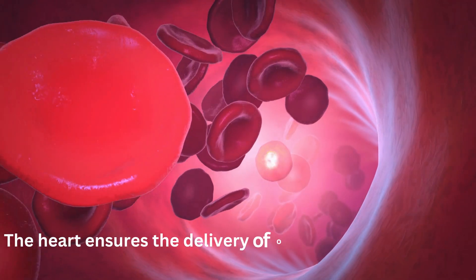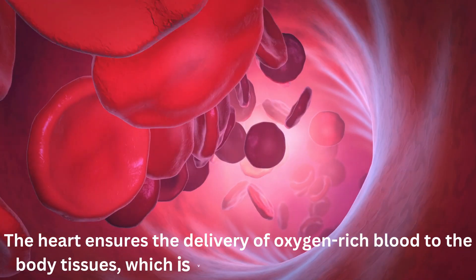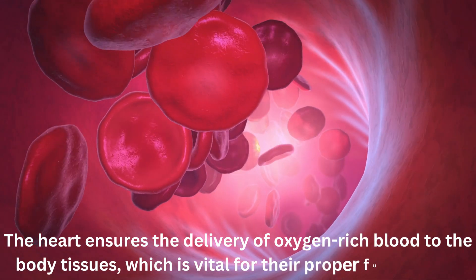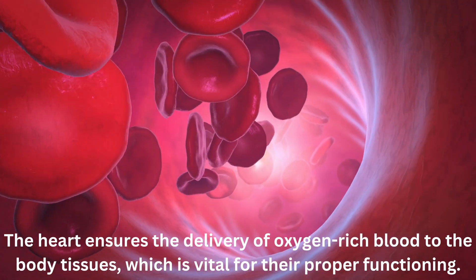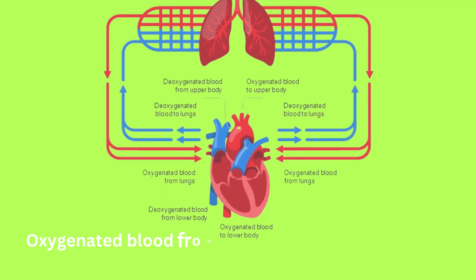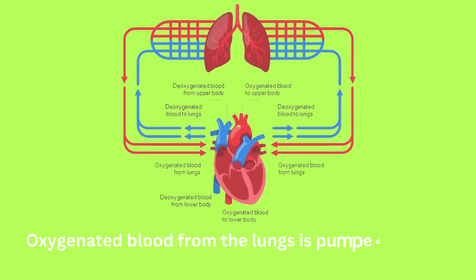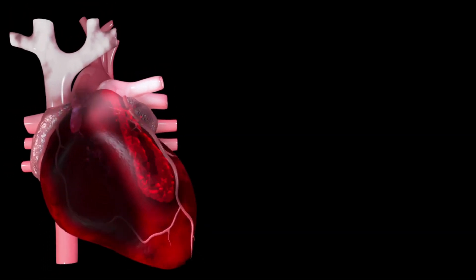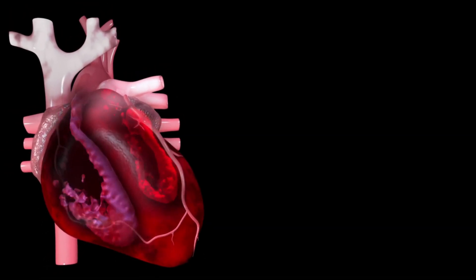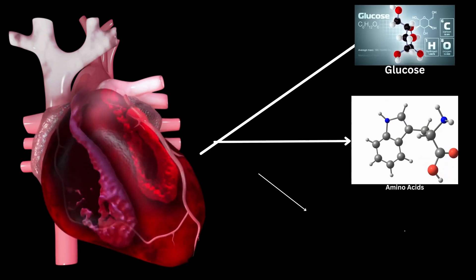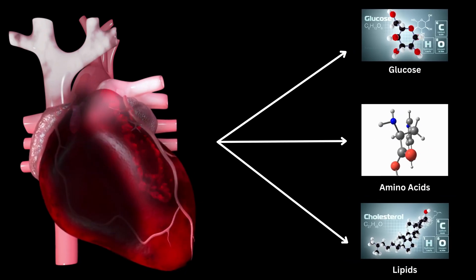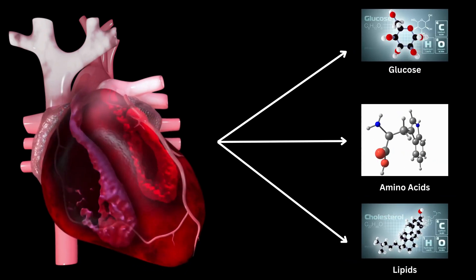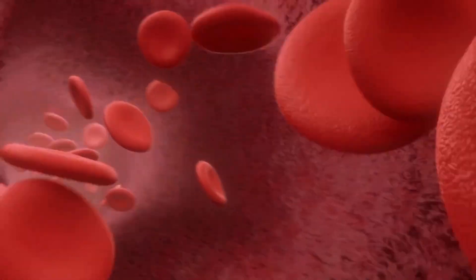The heart ensures the delivery of oxygen-rich blood to the body tissues, which is vital for their proper functioning. Oxygenated blood from the lungs is pumped into the systemic circulation, reaching every cell in the body. The heart also facilitates the distribution of nutrients, such as glucose, amino acids, and lipids, to various organs and tissues through the bloodstream.